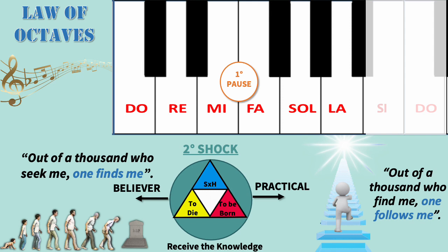But if we are that one among a thousand who manages to find objective knowledge in an existence, at that moment two paths open up to us: we either practice it and continue moving forward, or we don't practice it and turn it into a belief. Some will receive this knowledge and take the path of the believer — they will have it as just another theory and will not practice it. Therefore, they will not use it as that impulse or shock to start moving up the next notes. Out of a thousand who find it, only one follows it. There are really very few who begin to practice knowledge, and who, thanks to the experimentation and verification of the knowledge, receive that second shock that allows them to begin to advance in the awakening of their consciousness and in the creation of their internal bodies.